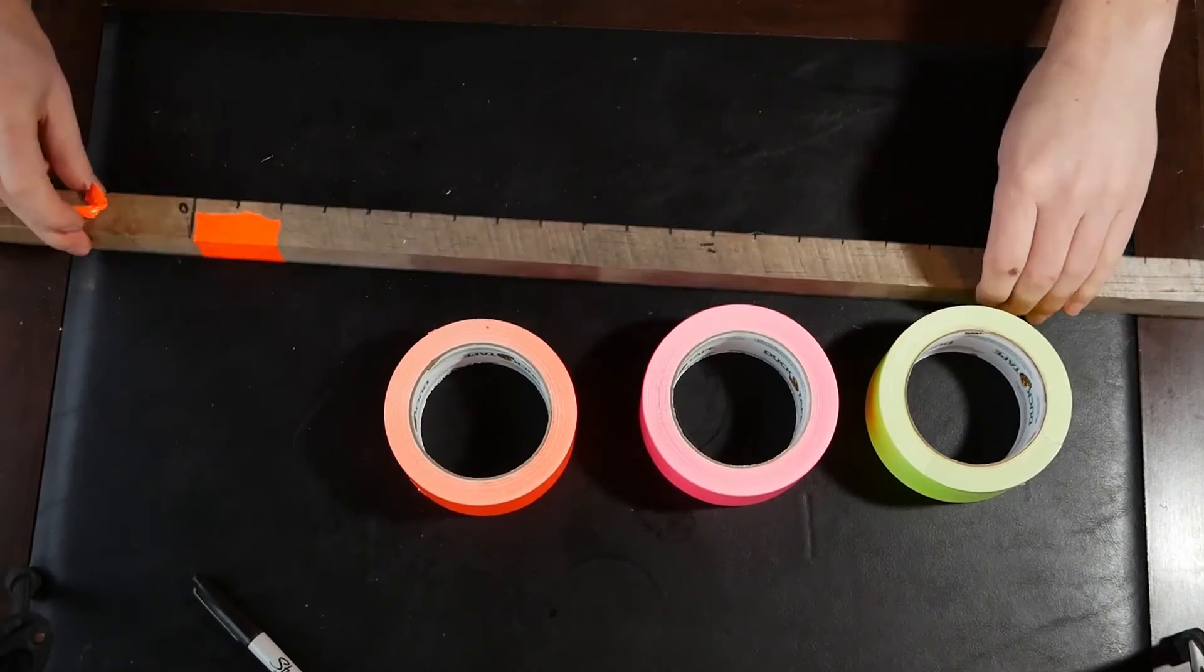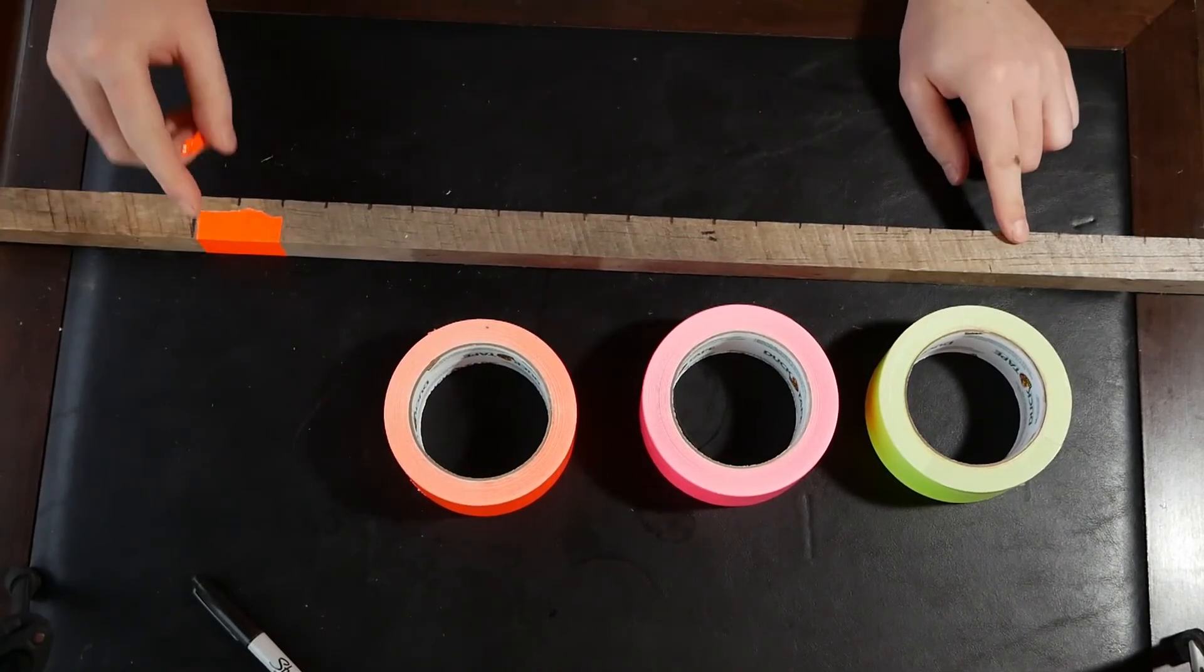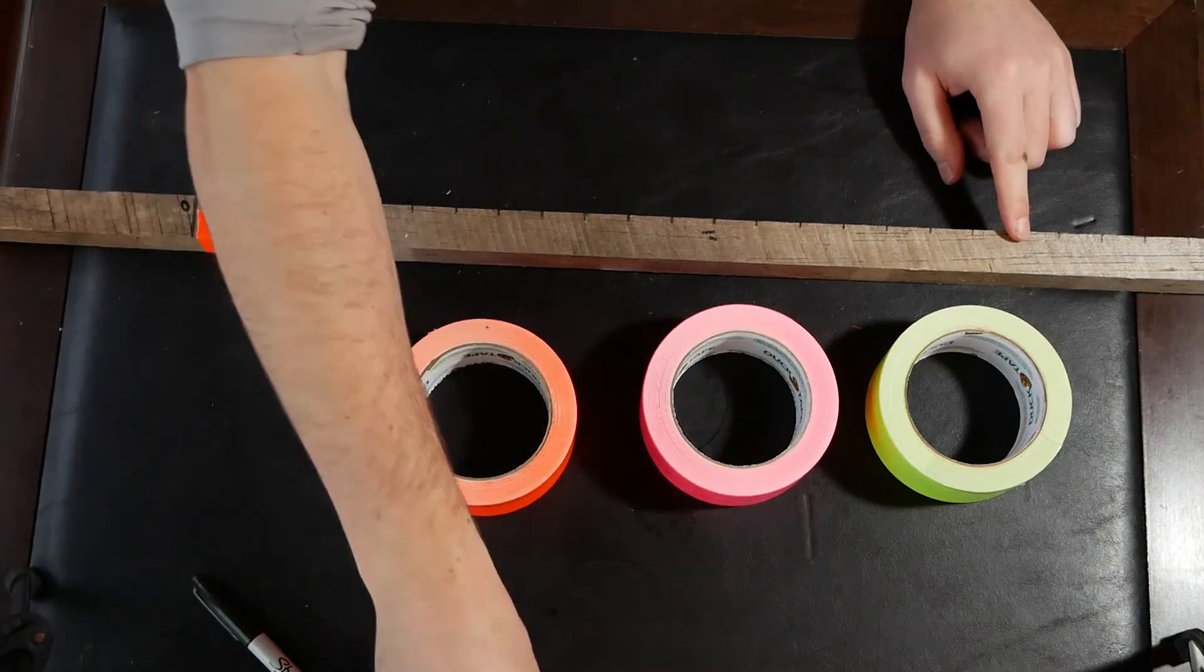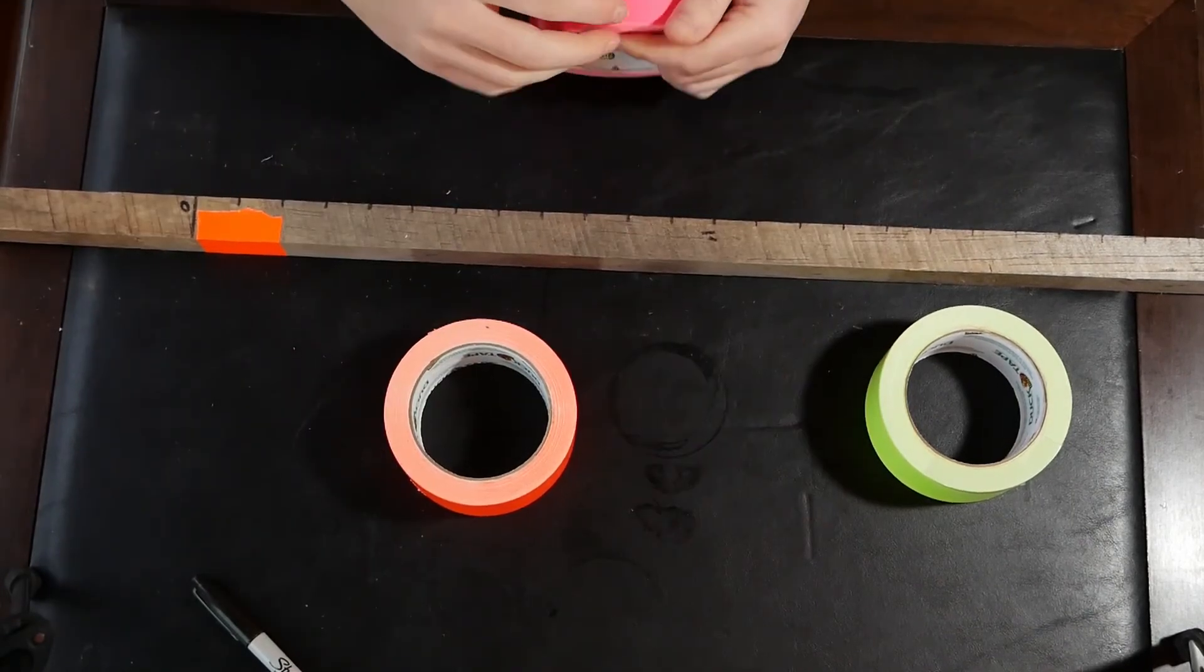One done. Now you can probably already tell that orange is gonna be a lot easier to see out in the yard than those little tiny sharpie marks.